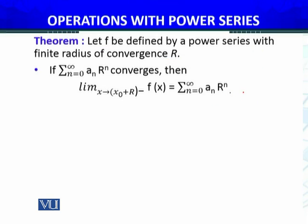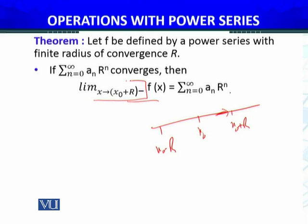This theorem states: first, if the summation of a_n times R^n converges, then the limit as x approaches x₀ plus R from the left side of f(x) equals f(x₀ plus R). Here x₀ plus R is the right endpoint of the interval of convergence.